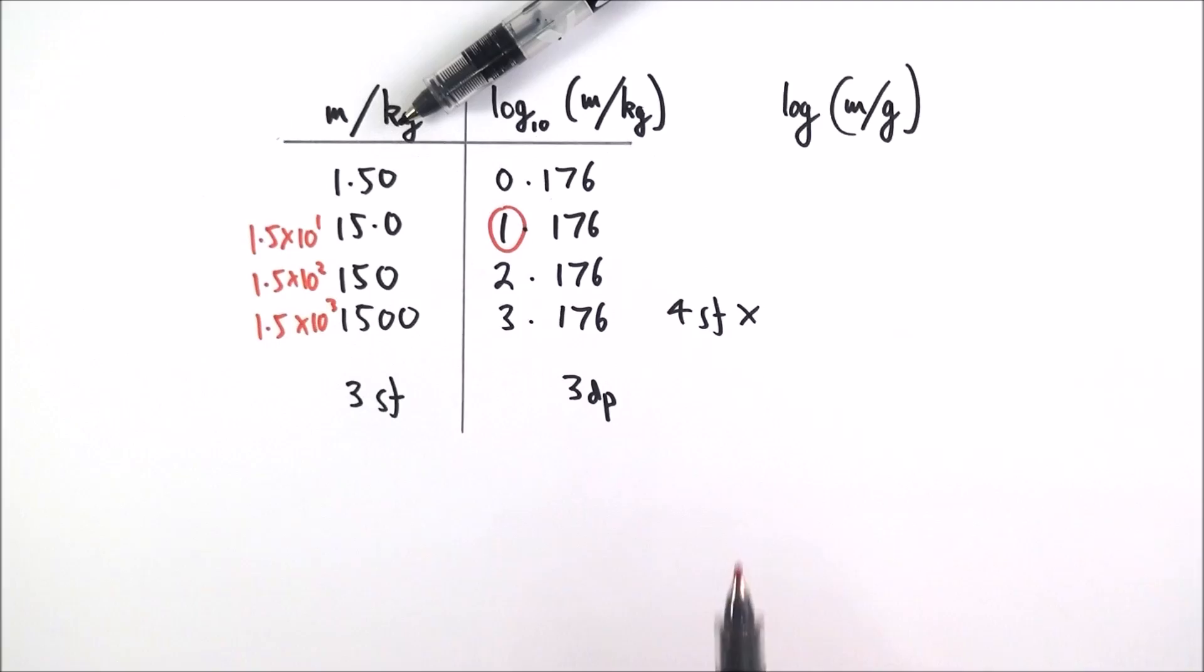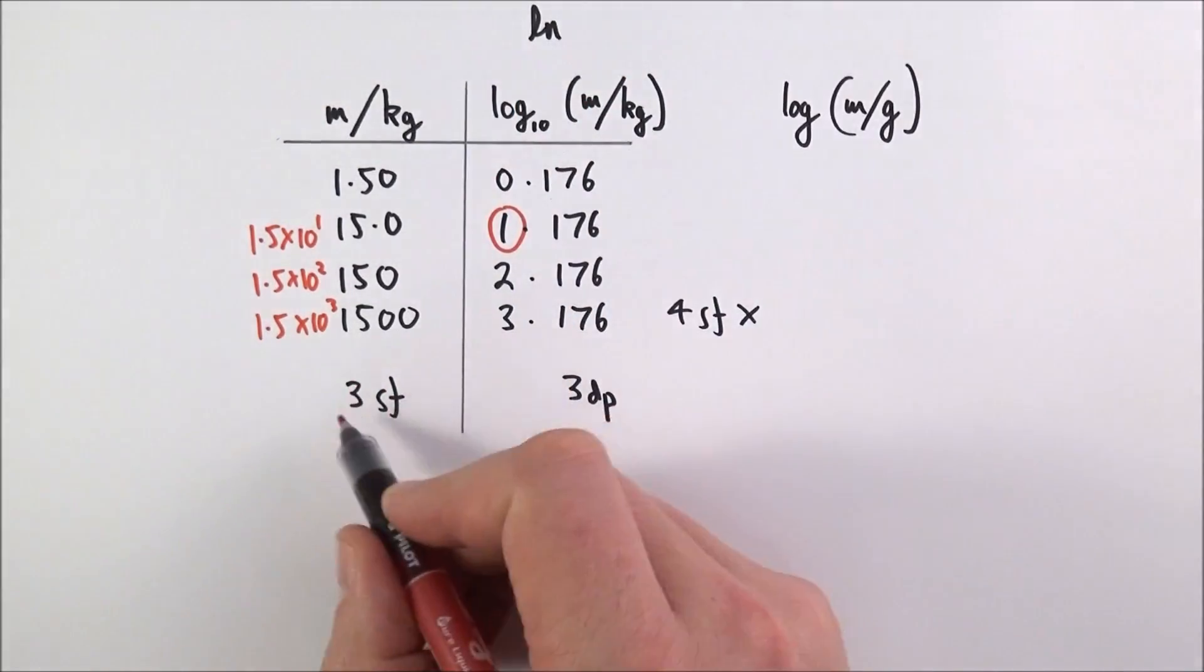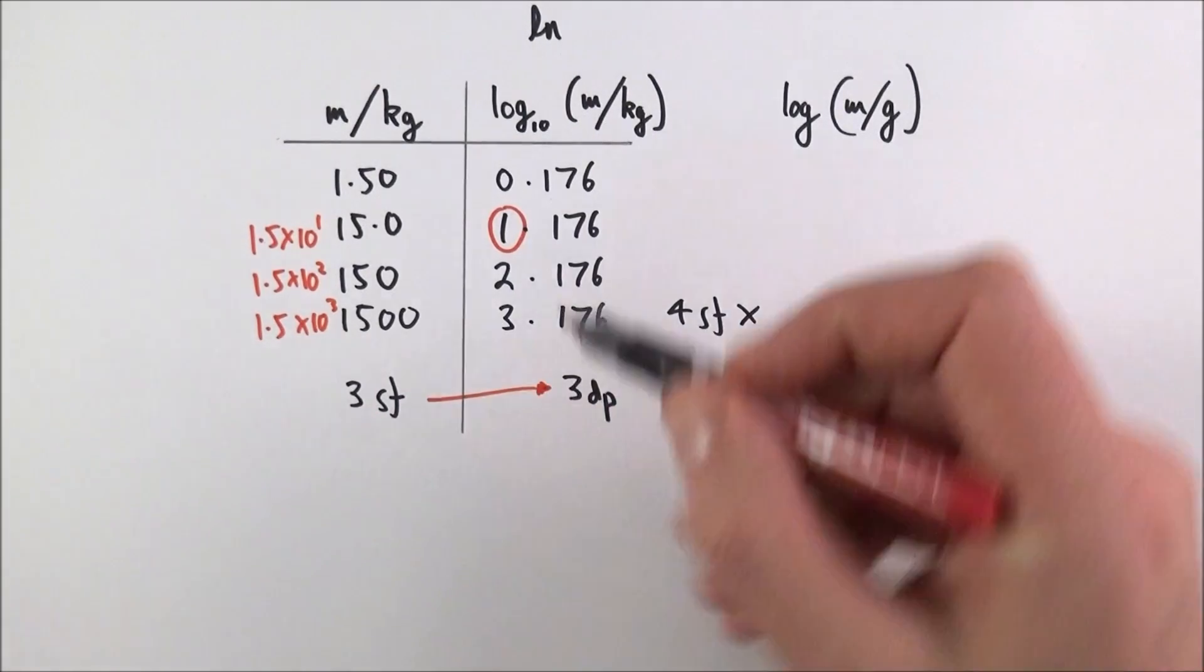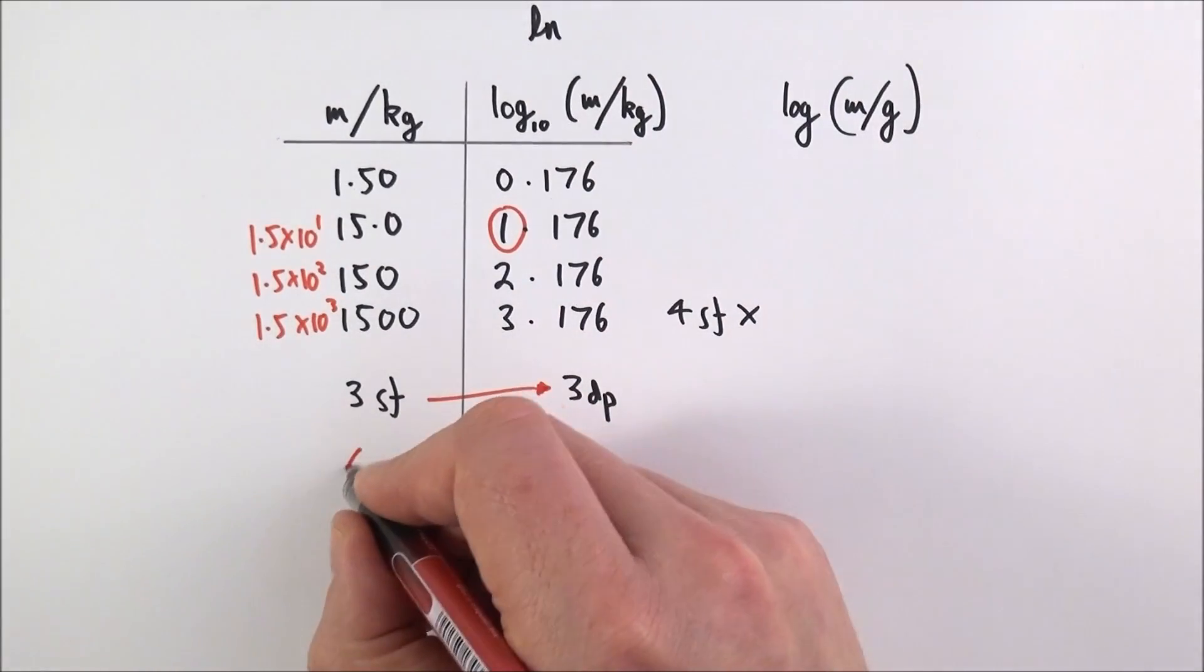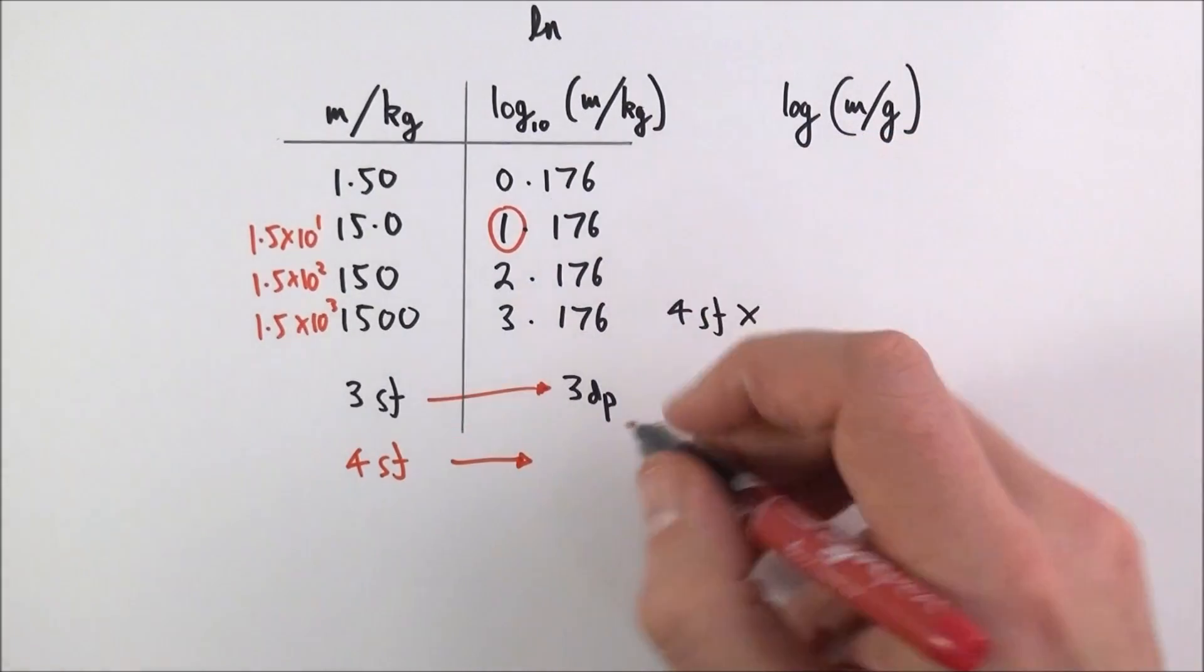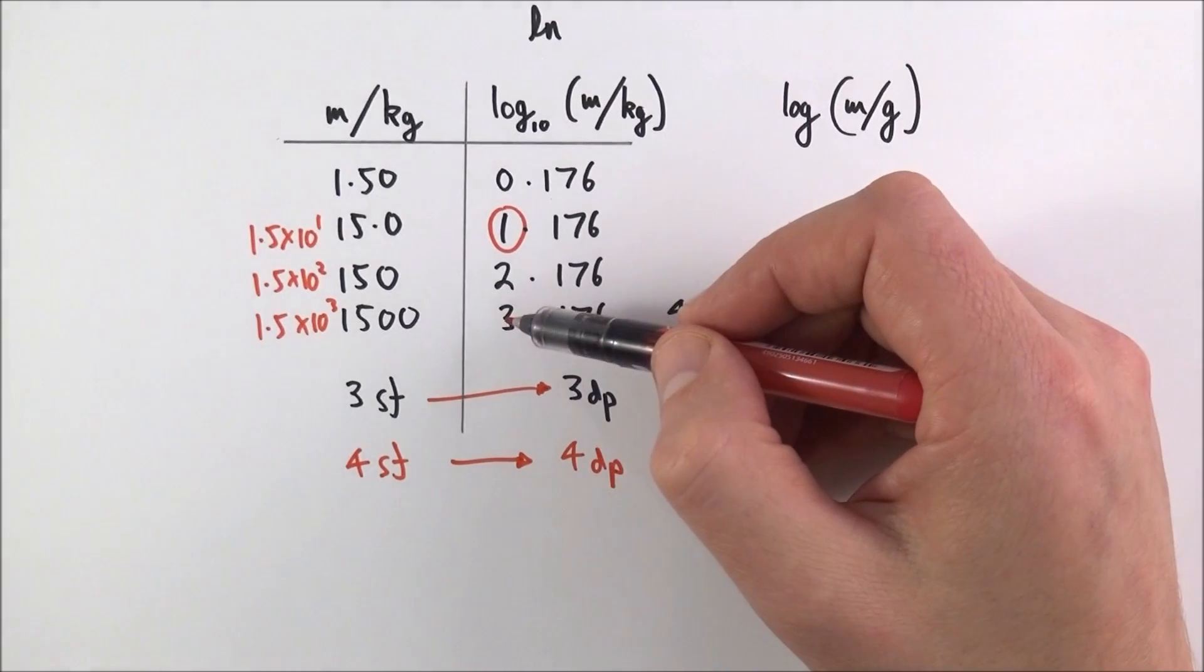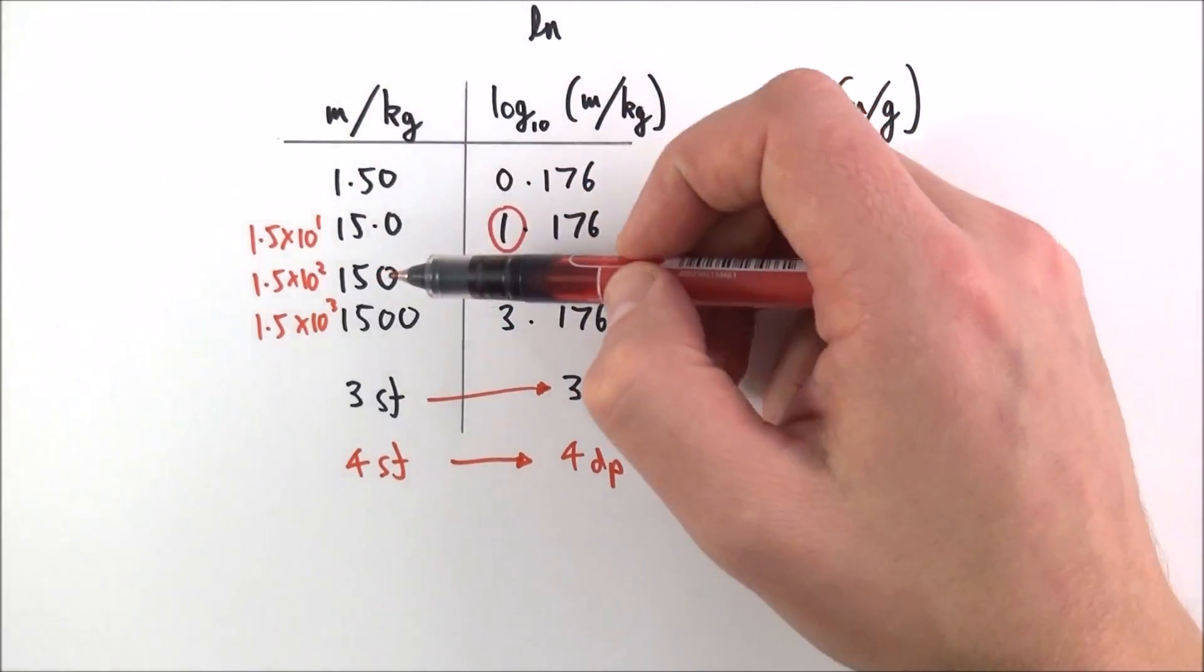The important thing to note is that when you have a table with logarithmic values, if your raw data is to three significant figures, your calculated values of the logarithmic value should be given to three decimal places. Likewise, if you have something to four significant figures, you should give your calculated values to four decimal places. That first figure doesn't add to the significance—it just tells you the size of this value.